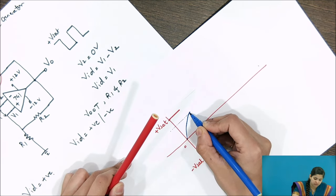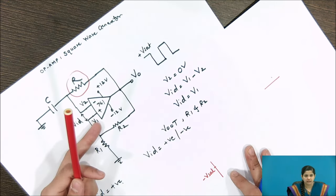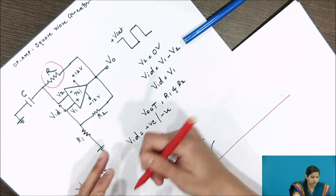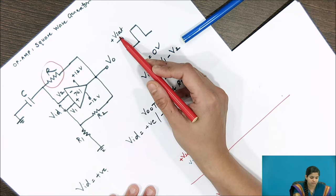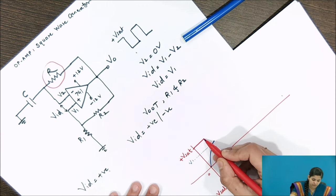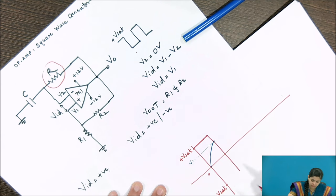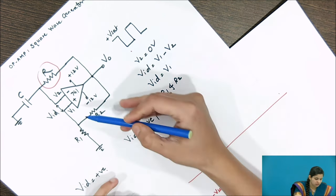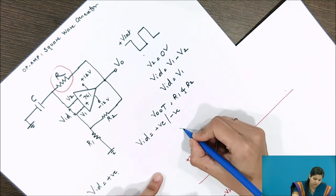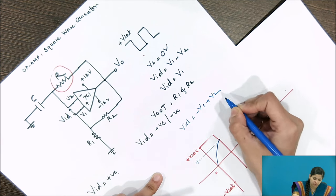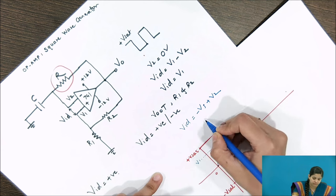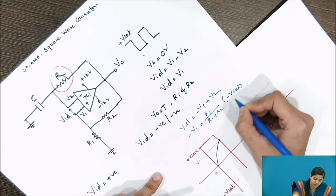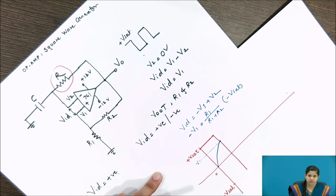Once V2 reaches or slightly exceeds the value V1, the output switches from positive saturation voltage toward negative saturation voltage. At this negative saturation, VID equals minus V1 plus V2, and V1 can be expressed as R1/(R1+R2) multiplied by the negative saturation voltage, since the output of the op-amp is now at negative saturation.